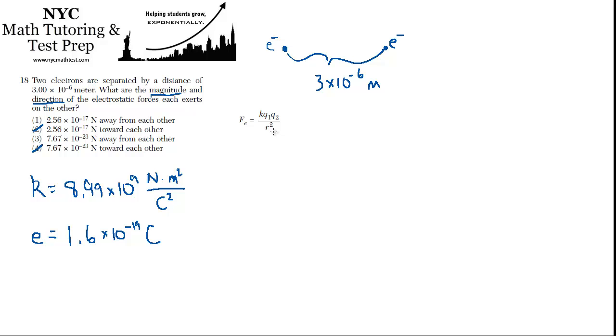And then lastly, you have this R in the denominator - that's the distance between the particles. These two particles are 3×10^-6 meters apart, that's your R. I'm not going to write that one down again, I'll just put R equals that. Now it's a matter of plugging it all in, and then we can solve for the electrostatic force.